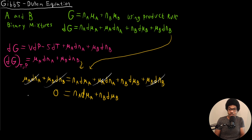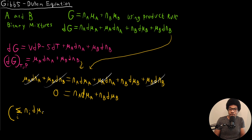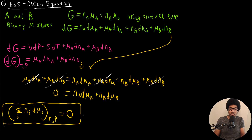Obviously we can extend this to any number of components. In general, we can write the Gibbs-Duhem equation as the sum over all components i of N_i·dμ_i = 0, and again this is at constant temperature and pressure. This is the general expression of the Gibbs-Duhem equation.